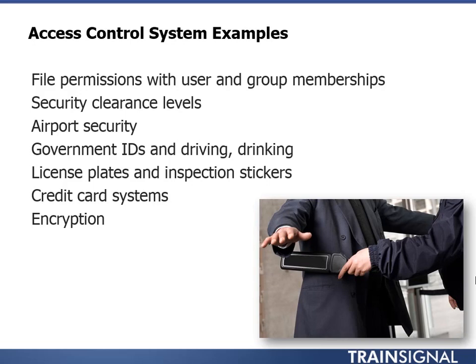The whole process governments have set up for issuing government IDs with pictures and putting laws in place to make sure bartenders check your ID before giving you a drink is an access control system. There's even more to it because they have audits — they'll send in a 20-year-old working undercover, and if the bartender serves him without carding him, that audit will prove they are not following the access control system correctly. In that way they have an access control system that helps make sure it stays in place and works properly.